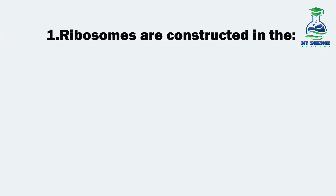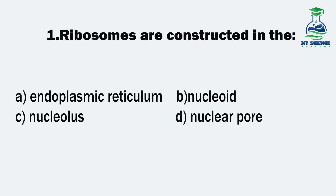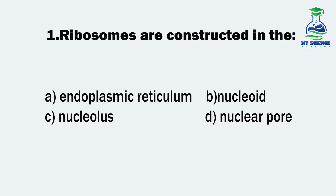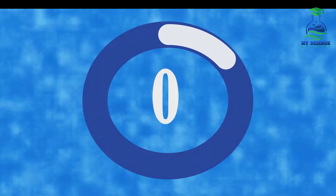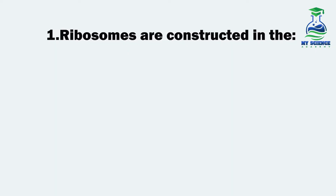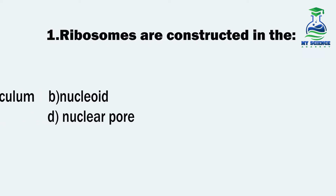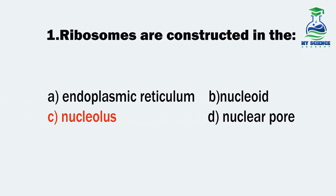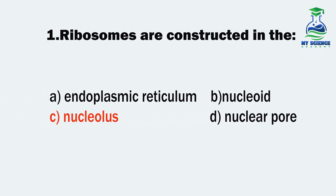Question 1. Ribosomes are constructed in the: A. Endoplasmic reticulum, B. Nucleoid, C. Nucleolus, and D. Nuclear pore. Let us see what is the correct option. C. Nucleolus is the correct option.